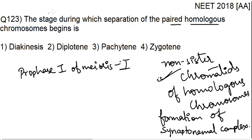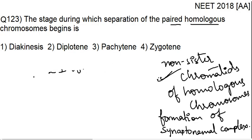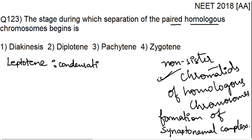Now let's discuss all five stages. The first stage is leptotene. It is not given in the options, but we will discuss all five stages as revision. In leptotene, the nuclear membrane is disintegrated and there is condensation of chromosomes.